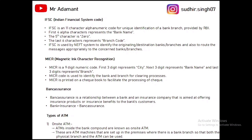Next is MICR — Magnetic Ink Character Recognition. It is a nine-digit numeric code: the first three digits represent the city, the next three represent the bank name, and the last three represent the branch. On a cheque, the first six digits at the bottom are the cheque number and the next nine digits are the MICR code. MICR codes are used in cheque clearing processes.